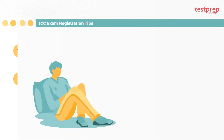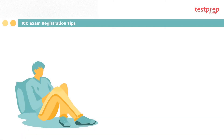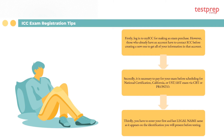ICC exam registration tips: First, log into My ICC to make an exam purchase. However, those who already have an account must contact ICC before creating a new one to consolidate all information in that account. Second, it is necessary to pay for your exam before scheduling for national certification, California, UST, or AST exam via CBT or Pronto. Third, enter your first and last legal name exactly as it appears on the identification you will present before testing.